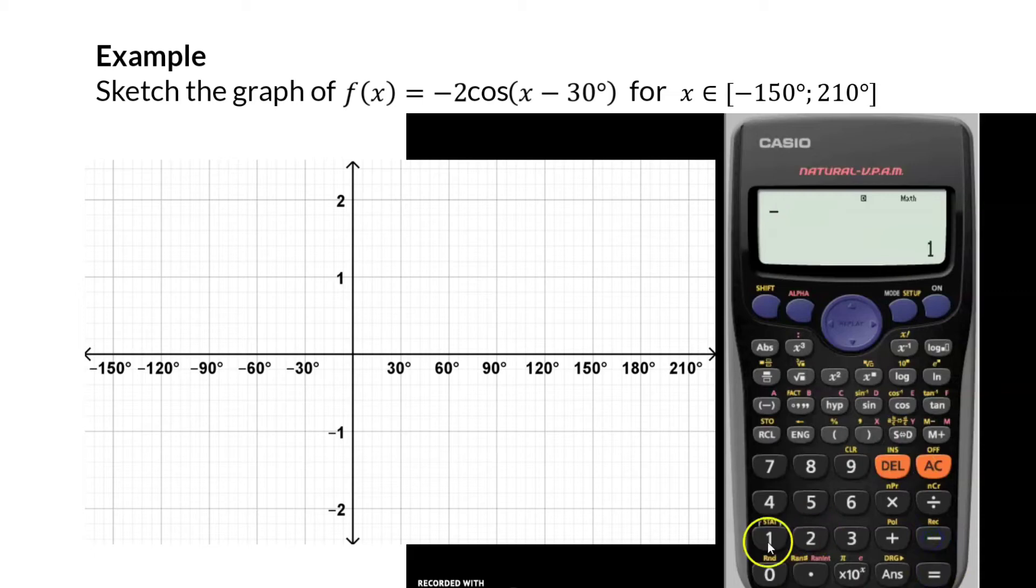Our interval starts at -150 degrees and ends at 210 according to the question. And for the steps, a good idea is to work in 30s because of the shift of 30 degrees. And here we have all the necessary coordinates that we can now go and plot.